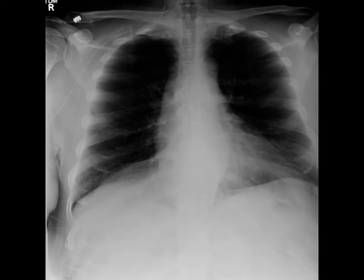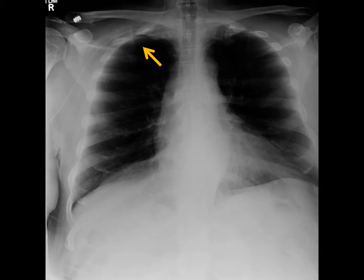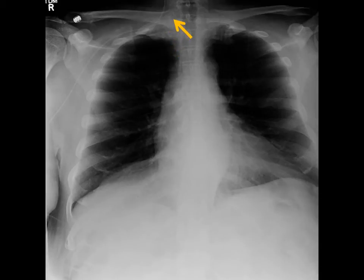A 74-year-old female admitted for bacteremia secondary to a foot ulcer with a history of diabetes had a PIC placed, with a chest x-ray taken to verify position. Even if you didn't know a PIC had been placed, you'd notice this line is thinner than a central catheter and coming from further in the periphery — suggesting a PIC rather than a central line placed in the internal jugular. Unfortunately, this PIC deflected up into the right IJ and would have to be replaced.